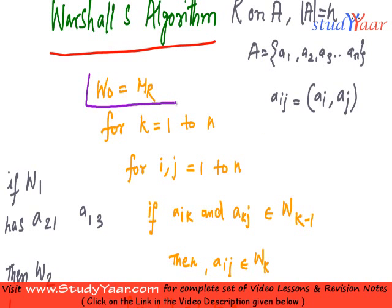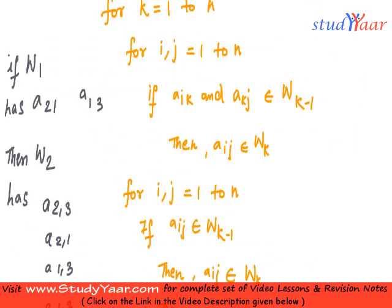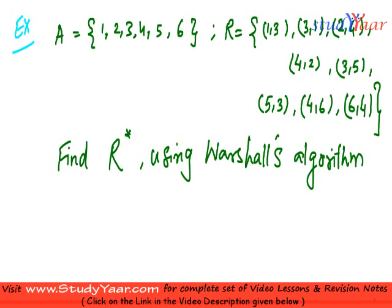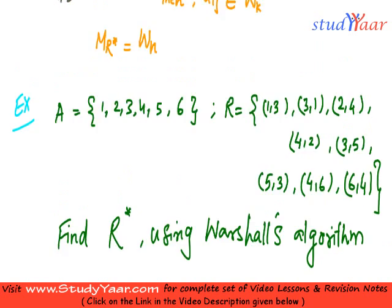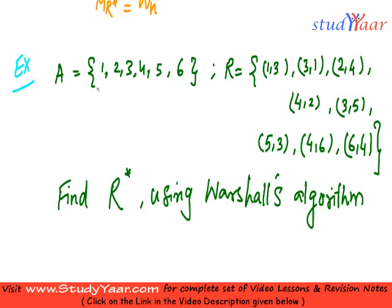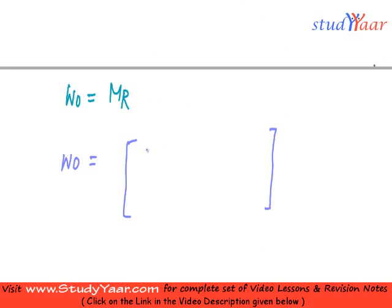Initially we are going to start off with W0. So let us find out what is W0. We know that W0 is equal to the matrix of R. So let us create the matrix for R. My W0 is going to be a 6 by 6 matrix, because I have 6 elements in A.